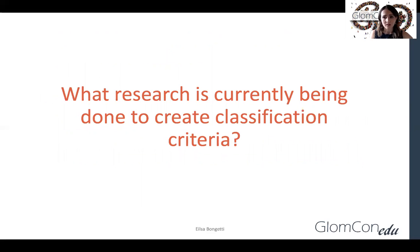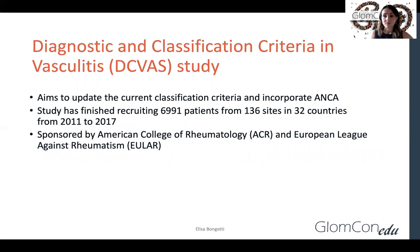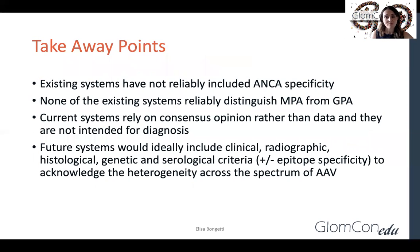Current research includes the Diagnostic and Classification Criteria in Vasculitis (DCVAS) study, which aims to update the current classification system. It ran between 2011 and 2017, recruited over 6,000 patients from 136 sites in 32 countries. The key takeaways are: existing systems do not reliably include ANCA specificity, and none reliably distinguish between MPA and GPA. Current systems rely on consensus opinion rather than being data-driven and are often nomenclature rather than diagnostic systems. Future systems would ideally include clinical, radiographic, histological, genetic, and serological criteria to acknowledge the great heterogeneity across the spectrum of ANCA-associated vasculitis.